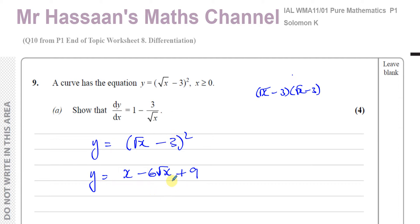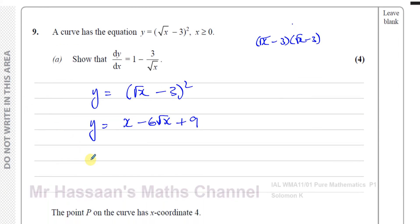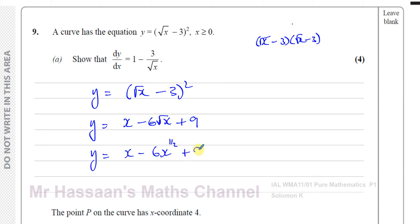Now we've expanded the brackets but haven't started differentiating yet. There's one more step before differentiating: express the surd form in index form, so √x is written as x to the power of a half. We now have x − 6x^(1/2) + 9, and it's ready to be differentiated.